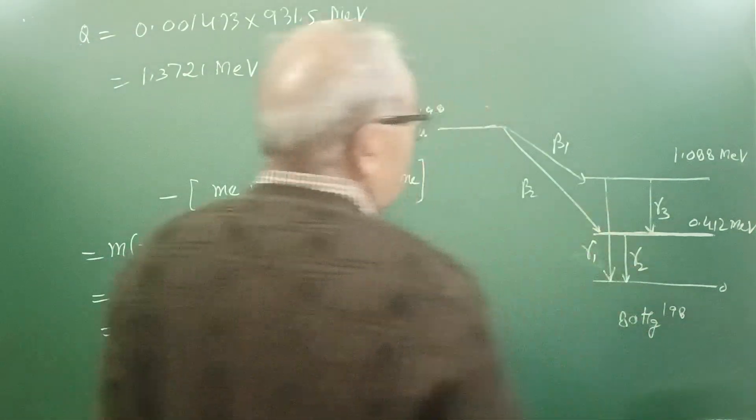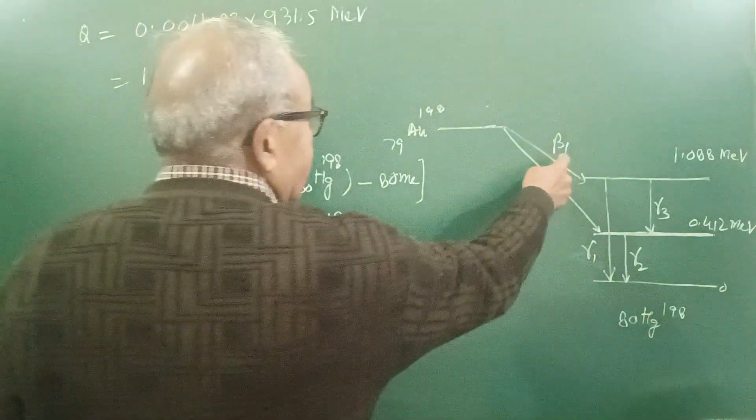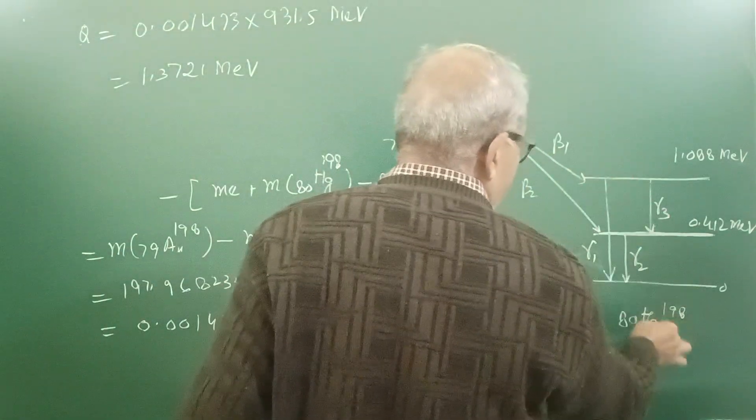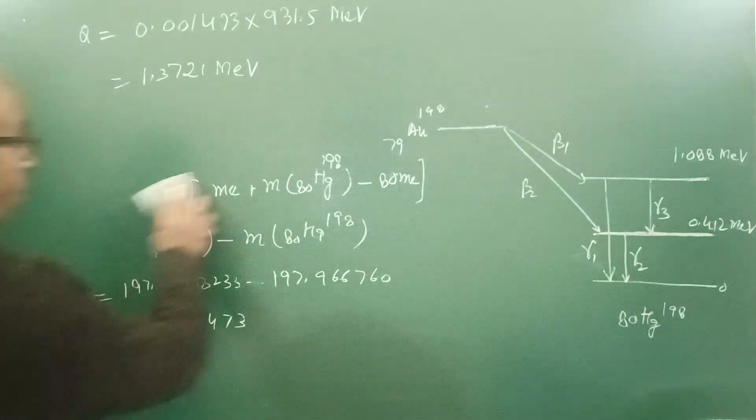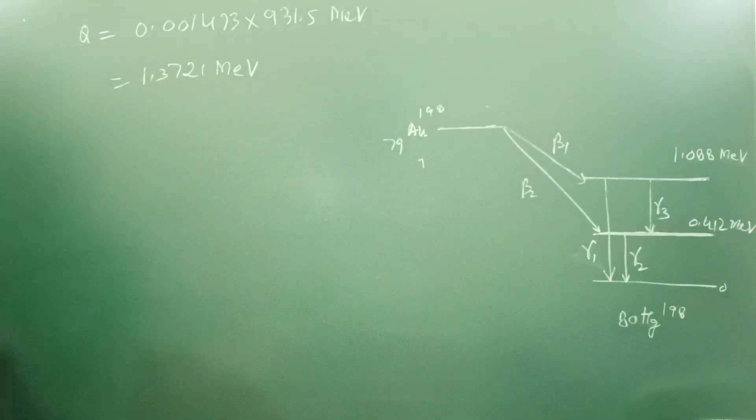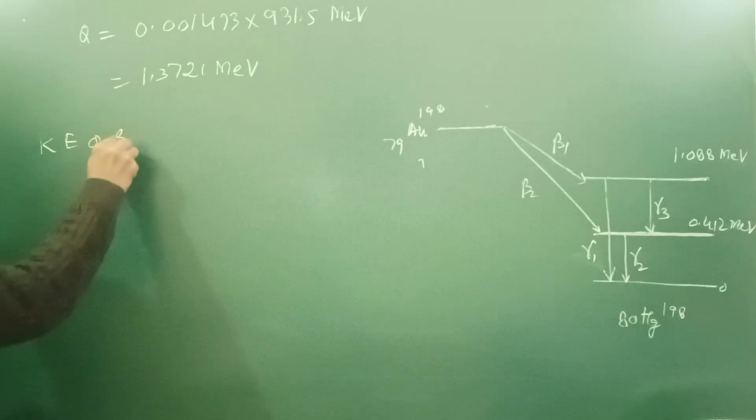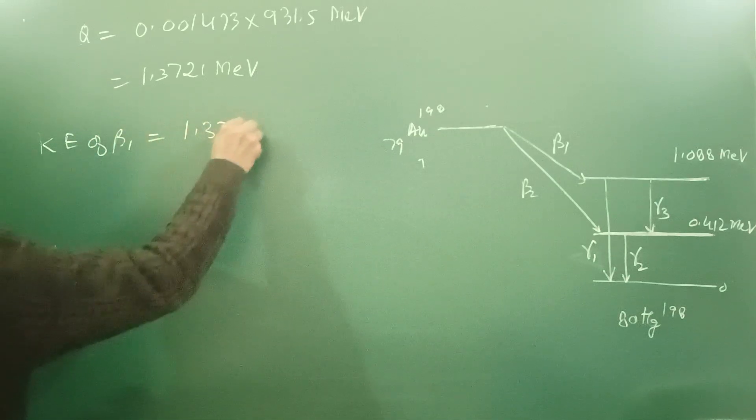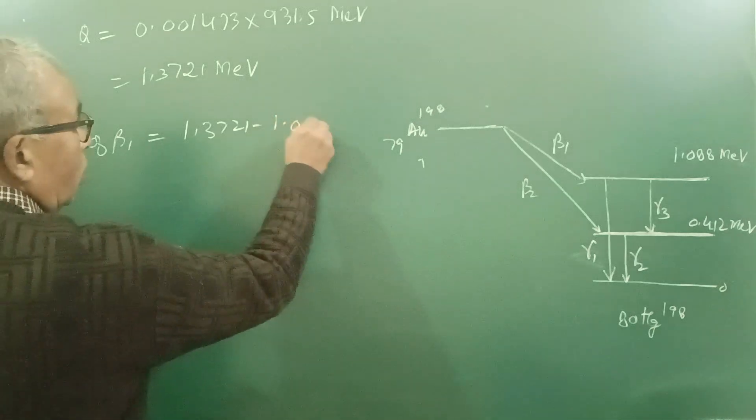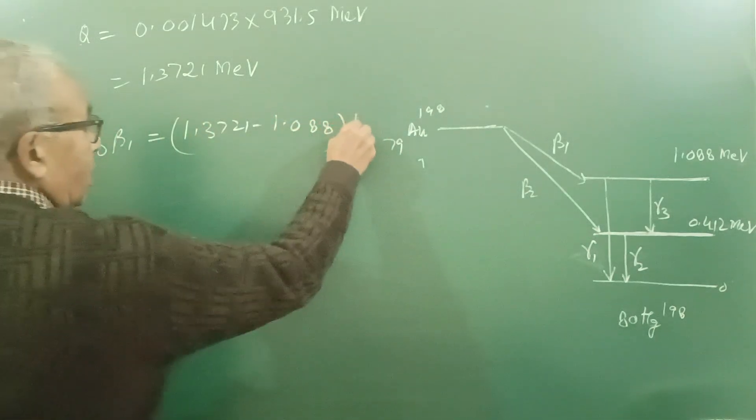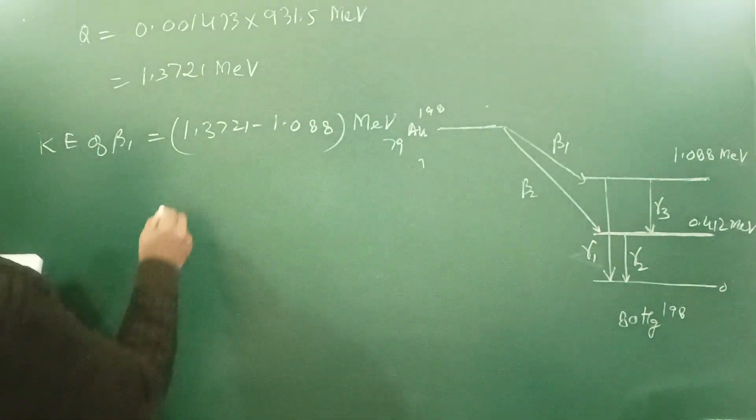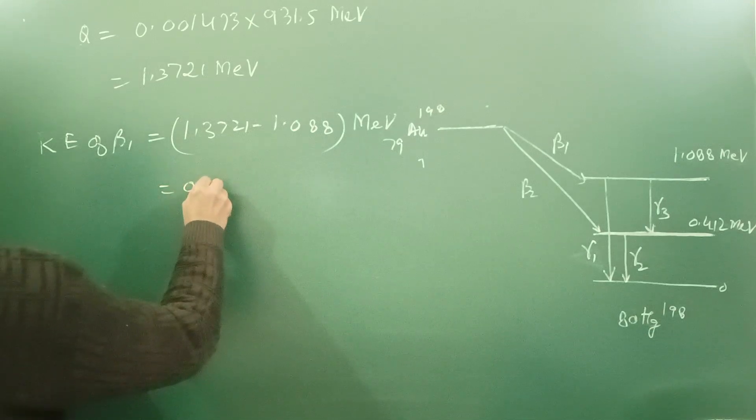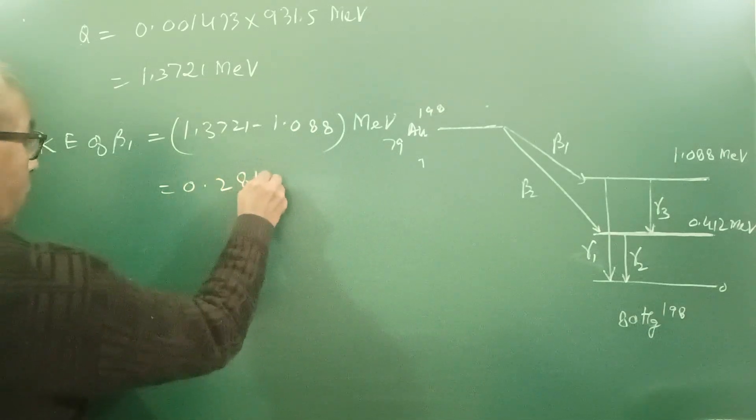If beta 1 is emitted, then the nucleus of mercury is left with this energy. So kinetic energy of beta 1 equals 1.3721 minus 1.088 MeV. Here it comes out to be 0.284 MeV.